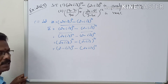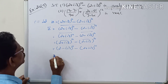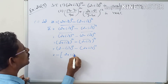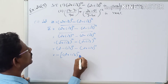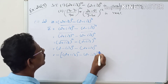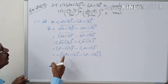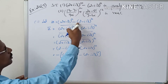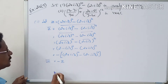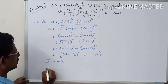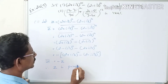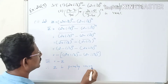Taking the conjugate changes the imaginary sign. So we get (2 + i√3)^10 minus (2 + i√3)^10, which equals minus z. Therefore z̄ equals minus z, which means z is purely imaginary.